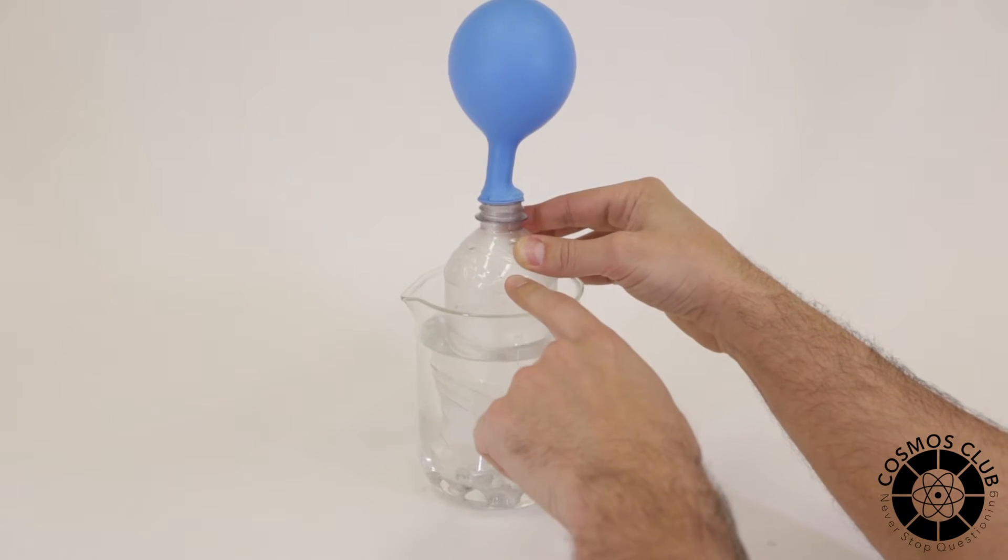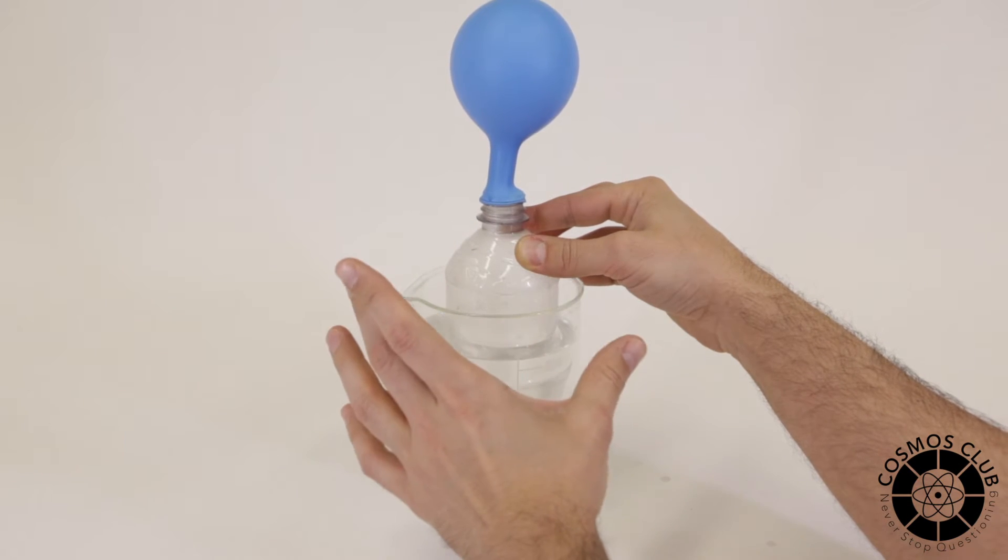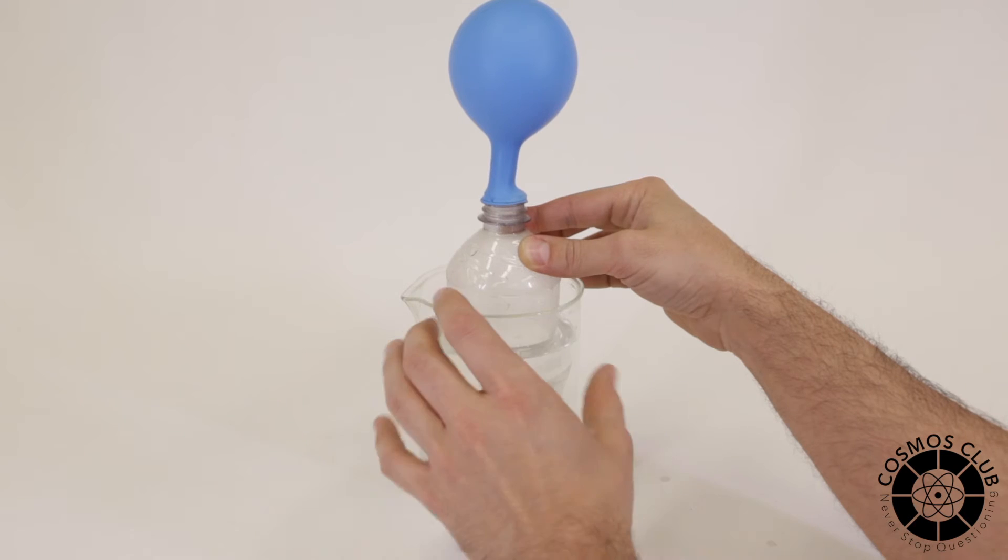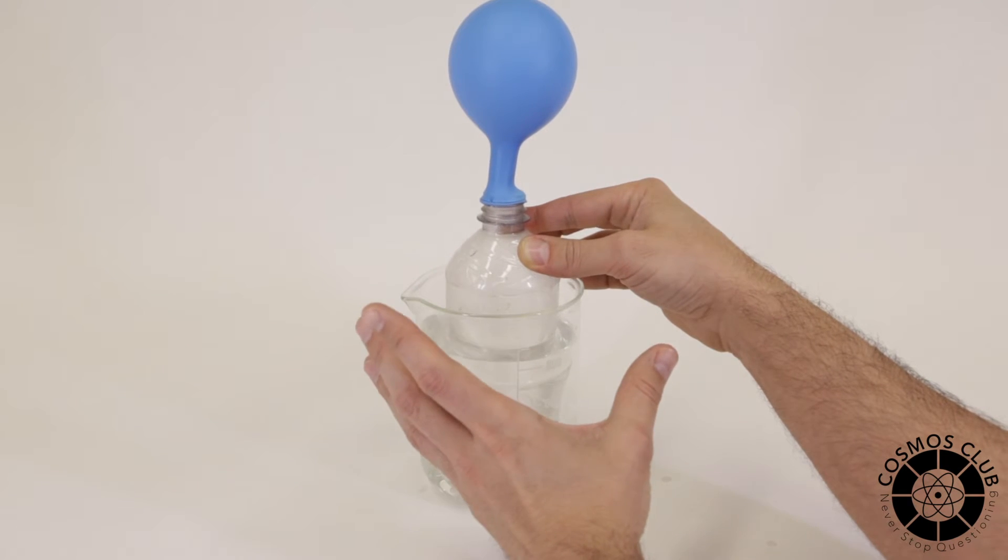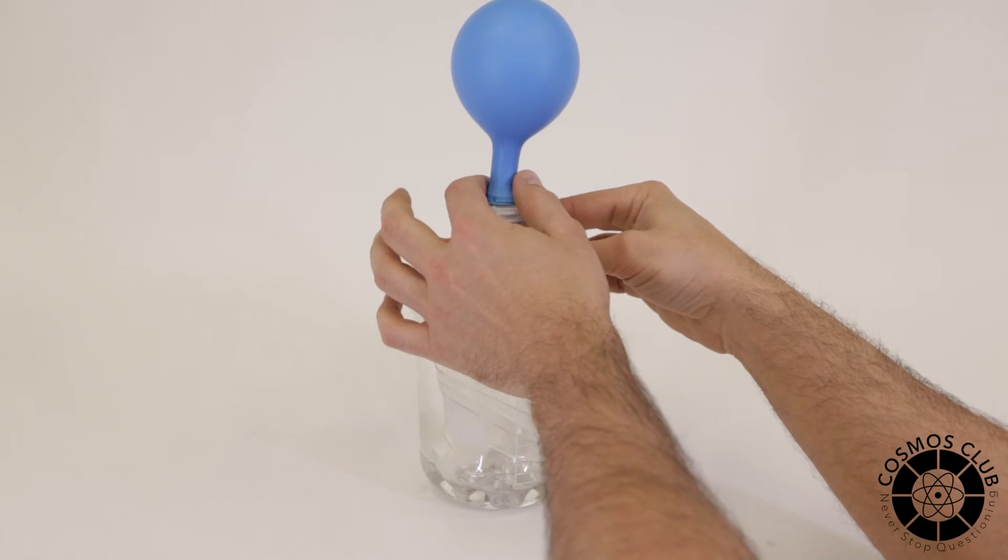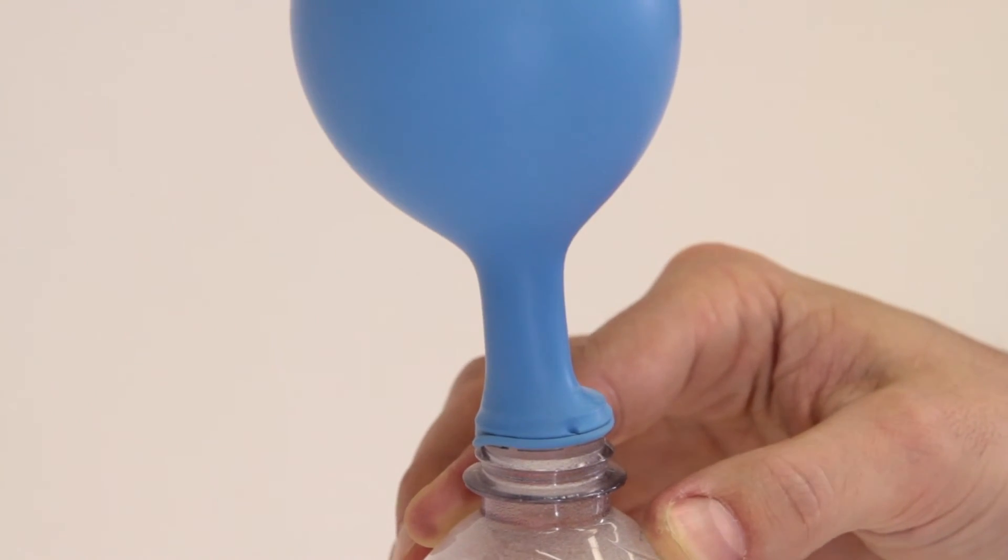As you heat the air inside, the particles get excited. They move faster, they hit each other harder, and they separate. They move farther apart. So the volume of air inside this bottle has increased. It's gotten more. We haven't added air, but the space between the particles has gotten greater. So it needs a place to go. It'll just fill up this balloon because pressure is caused by moving particles.